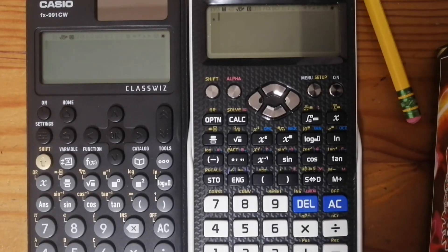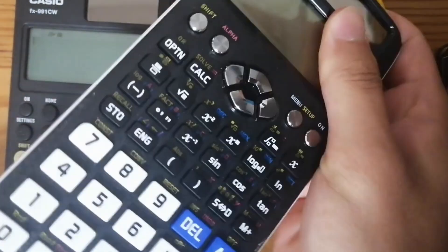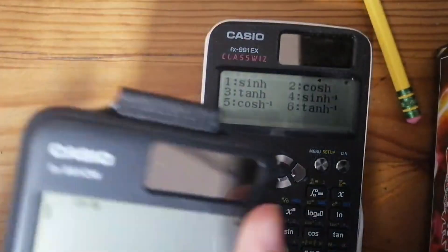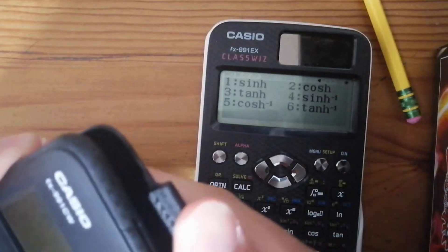And in addition to that, the case is also different. So let me show you how the case of the EX looks. You can slide it out, right? You just slide it into the case. However, that's not the case with the CW. On the CW, it doesn't have a sliding case. And so you have to actually snap it free out of its case and it comes off separately.